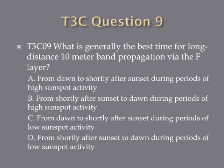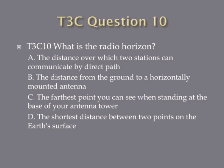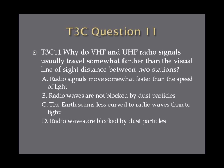Question 9. What is generally the best time for long distance 10 meter band propagation via the F layer? A. From dawn to shortly after sunset during periods of high sunspot activity. B. From shortly after sunset to dawn during periods of high sunspot activity. C. From dawn to shortly after sunset during periods of low sunspot activity. D. From shortly after sunset to dawn during periods of low sunspot activity. Question 10. What is the radio horizon? A. The distance over which two stations can communicate by direct path. B. The distance from the ground to a horizontally mounted antenna. C. The farthest point you can see when standing at the base of your antenna tower. D. The shortest distance between two points on the Earth's surface. Question 11. Why do VHF and UHF radio signals usually travel somewhat farther than the visual line of sight distance between two stations? A. Radio signals move somewhat faster than the speed of light. B. Radio waves are not blocked by dust particles. C. The Earth seems less curved to radio waves than to light. D. Radio waves are blocked by dust particles.